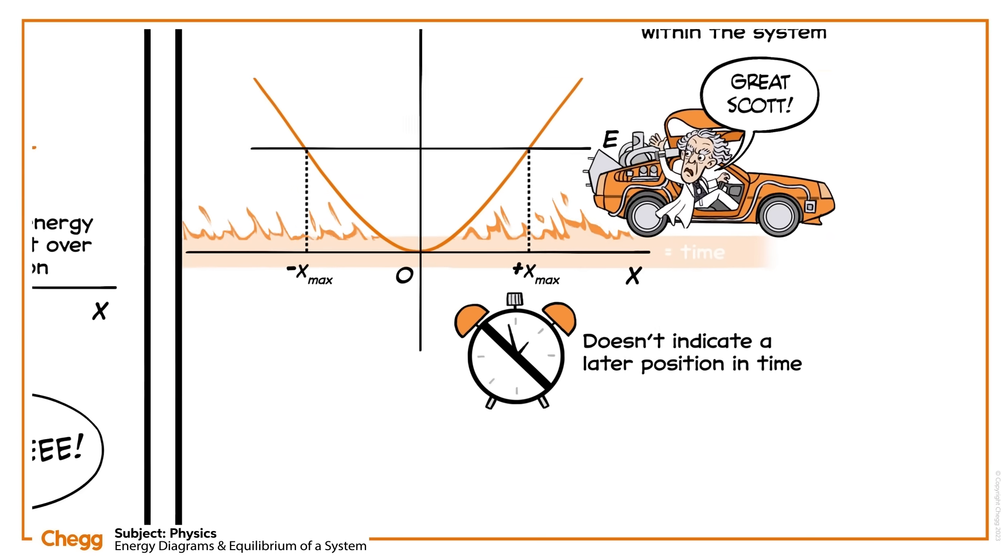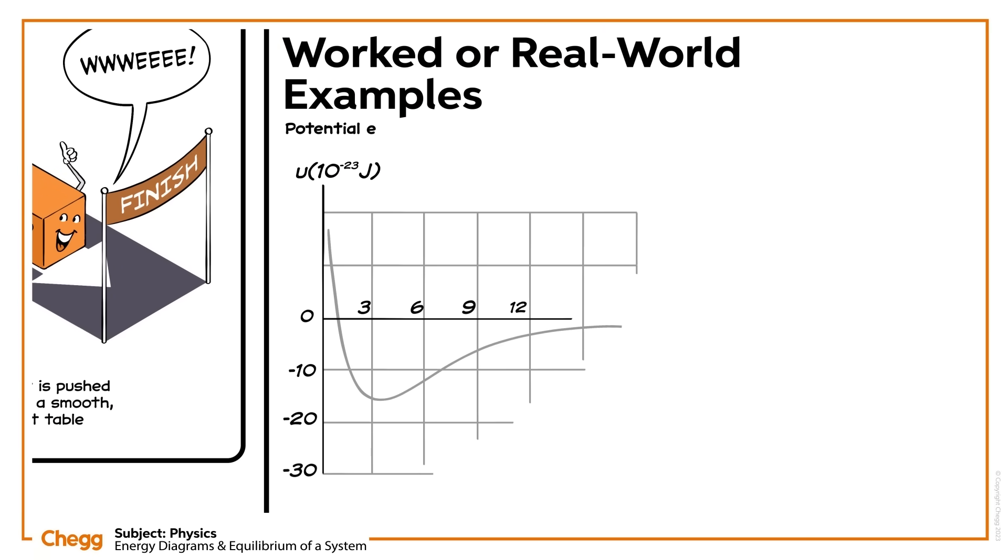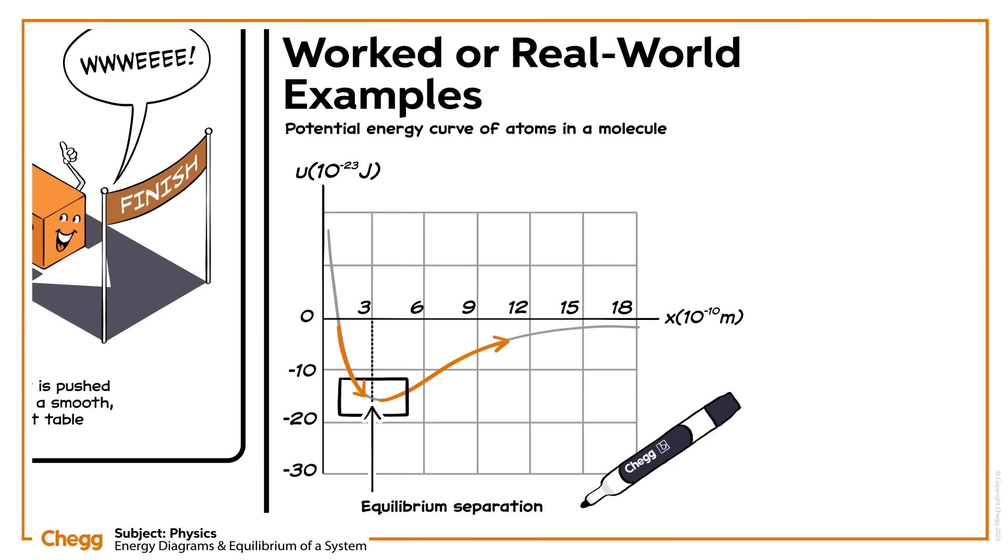Let's look at an example to help us better learn how to use energy diagrams. This graph shows the potential energy curve of atoms in a molecule. Give an approximate value for the equilibrium separation. As we know, the stable equilibrium exists at the minimum potential energy. Because this graph goes down and then back up, the stable equilibrium of separation between the atoms should be the lowest point in this graph. We can plot a line to the x-axis from the lowest point in this graph and approximate the equilibrium point to be around 3 times 10 to the negative 10 meters.